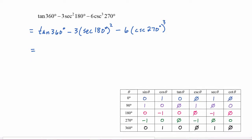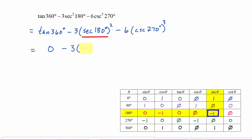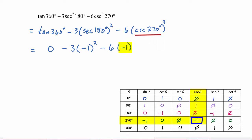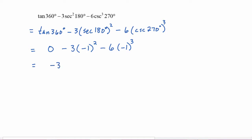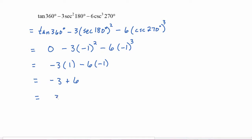Substituting in the values: the tangent of 360 is zero. The secant of 180 degrees is negative one, and we're going to square that — negative one squared is positive one. The cosecant of 270 degrees is negative one, and we're going to cube that — negative one cubed is negative one. So this becomes negative three times one minus six times negative one, which gives us negative three plus six, equal to three.